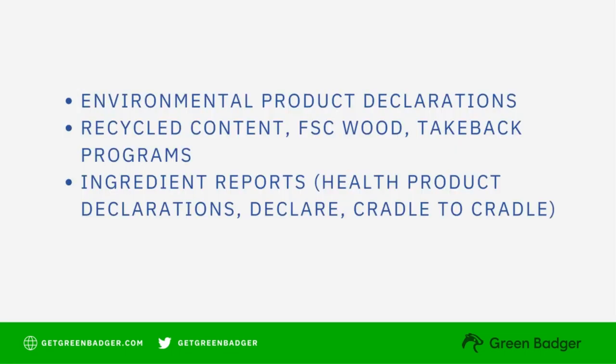Products could potentially have environmental product declarations or recycled content. Wood products could possibly have Forest Stewardship certification, and there are some products that have take-back programs, which means that the manufacturer will take back the product and recycle it at the end of its useful life. Ingredient reporting is another type of attribute a product could have. Ingredient reports tell us what products are made of and include health product declarations, declare labels, and cradle-to-cradle certificates, as well as some others.